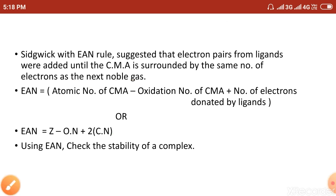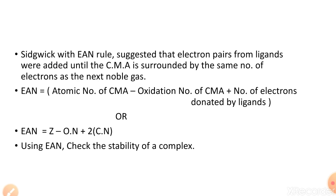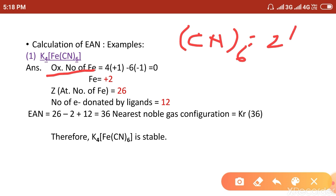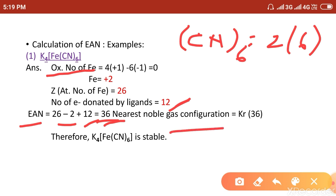For example, in K₄[Fe(CN)₆], the central metal atom is Fe with oxidation number +2. The atomic number of Fe is 26. CN⁻ ligands: 6 ligands donate 2 × 6 = 12 electrons. So EAN = 26 − 2 + 12 = 36, which is the atomic number of krypton. Hence K₄[Fe(CN)₆] is stable, as it achieves the nearest noble gas configuration.